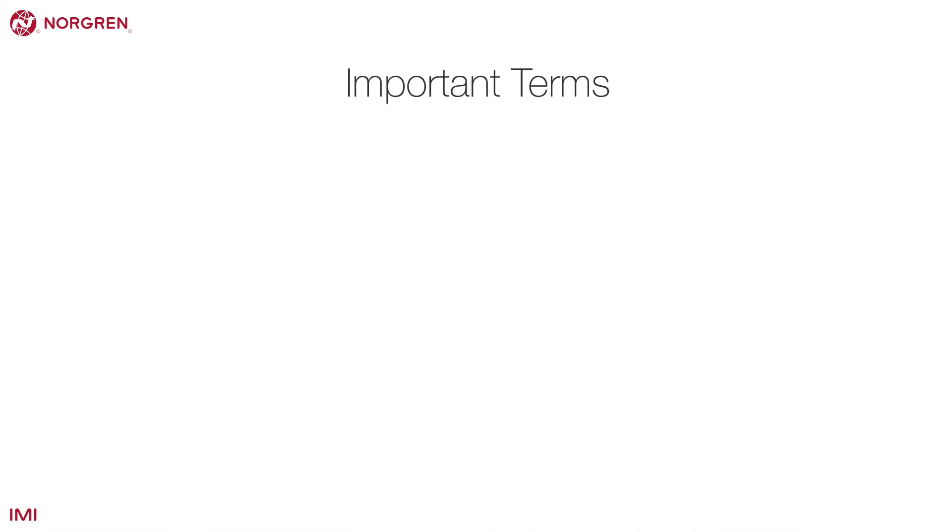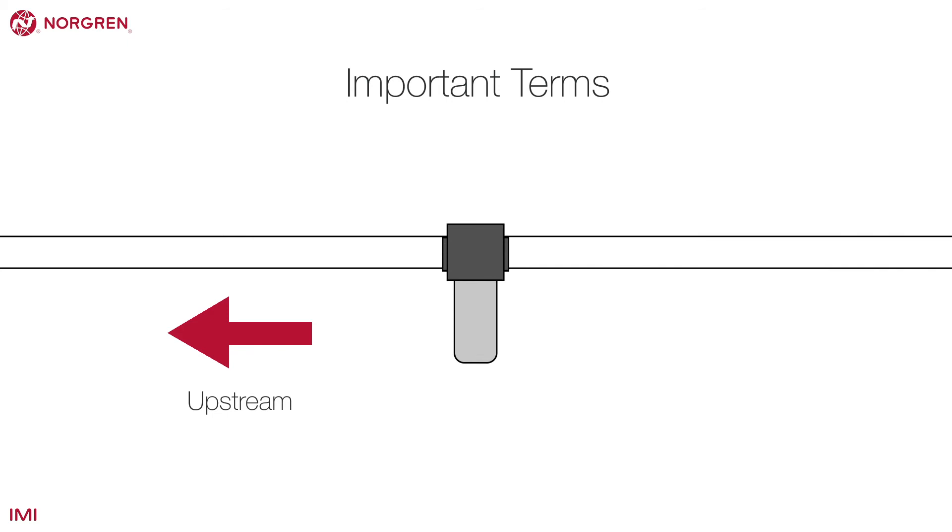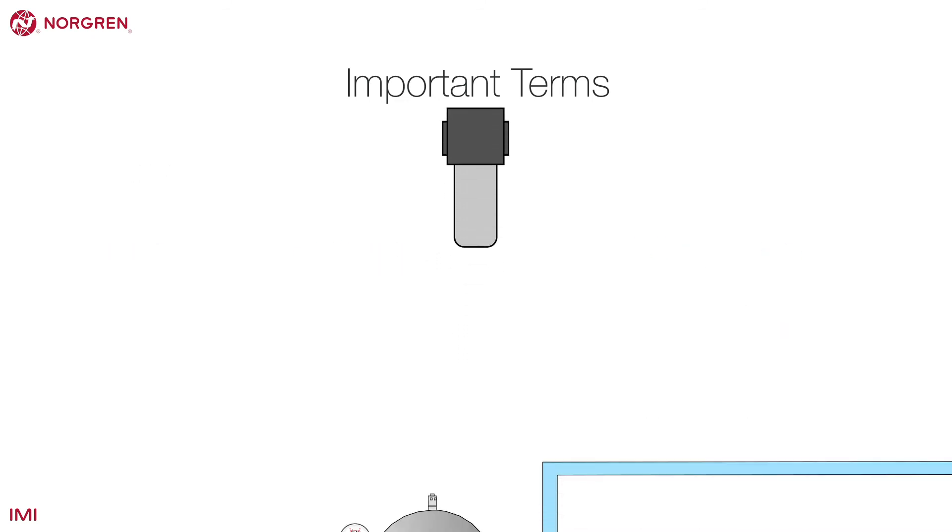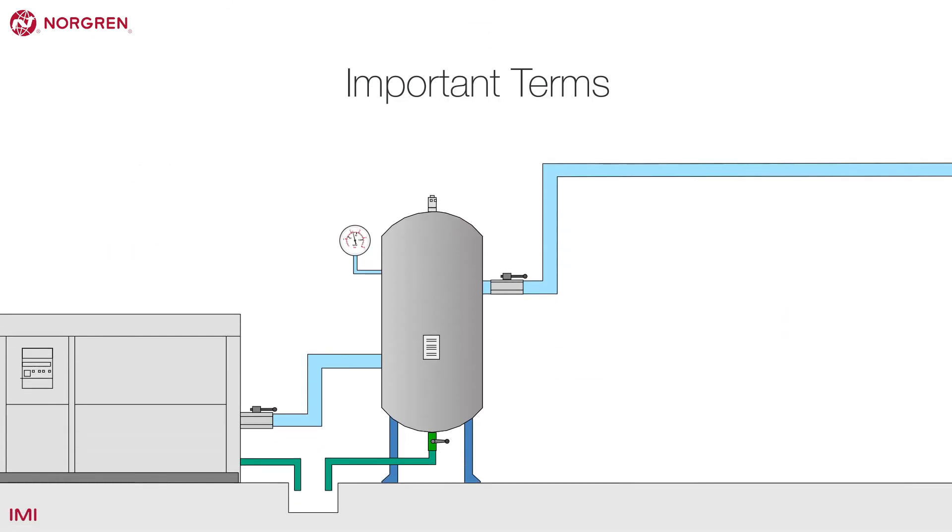Now let's look at some of the terms used here and in other parts of the compressed air world. Upstream refers to anything in a compressed air system before the point you are dealing with. Downstream is after. You can see from this example the air receiver is upstream of the isolating valve and the distribution pipe is downstream.